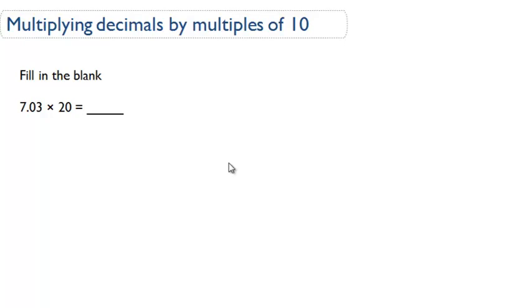Multiplying decimals by multiples of 10. There's actually going to be two ways to do this problem, 7.03 times 20. There's going to be two ways to do it.